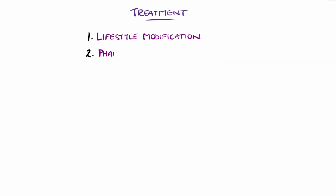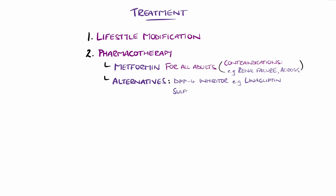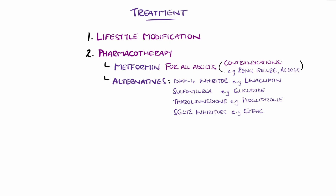Pharmacotherapy usually runs alongside lifestyle modification. First line, metformin is recommended for all adults unless contraindicated or not tolerated, such as in renal failure or metabolic acidosis. If this is the case, then options include a dipeptidyl peptidase-4 inhibitor, also commonly called gliptins, such as alogliptin or linagliptin, a sulfonylurea like gliclazide, a thiazolidinedione, particularly pioglitazone, or an SGLT2 inhibitor like empagliflozin. Alongside this initial monotherapy, if the person has heart failure or atherosclerotic disease, or a Q-risk score above 10%, then an SGLT2 inhibitor should be added.